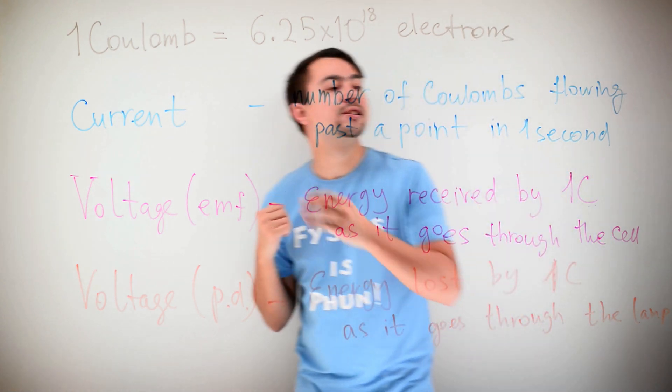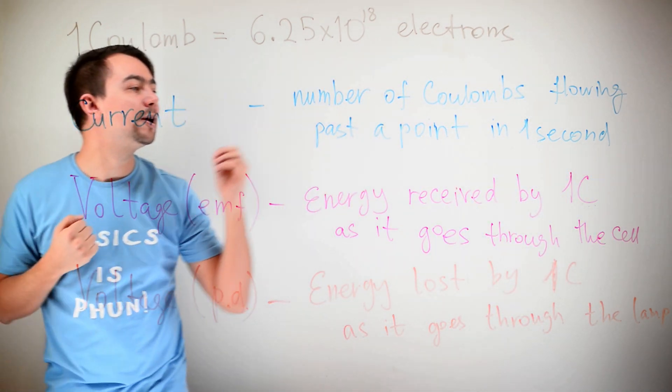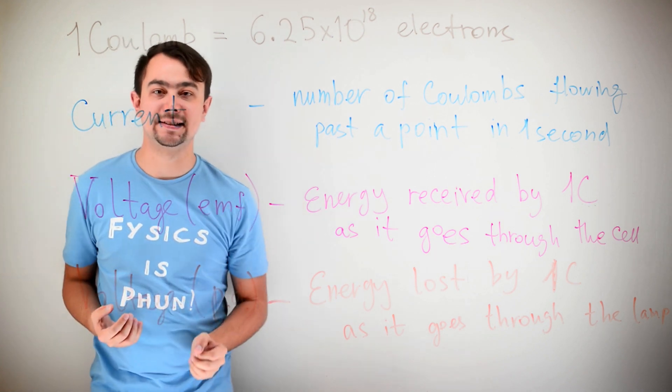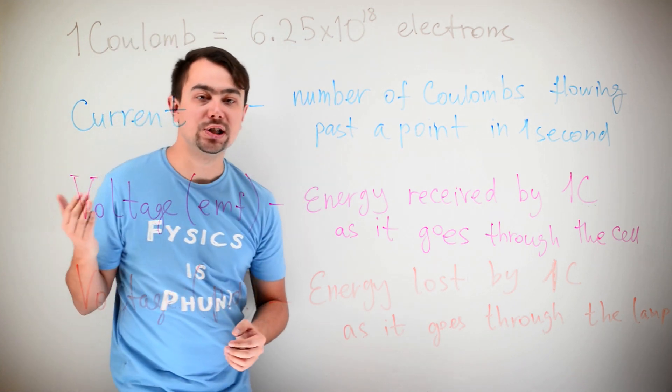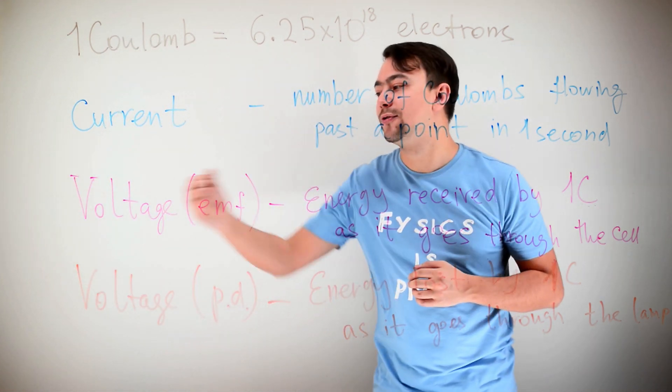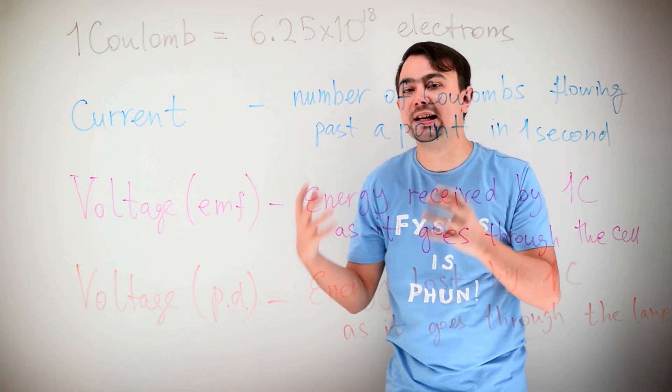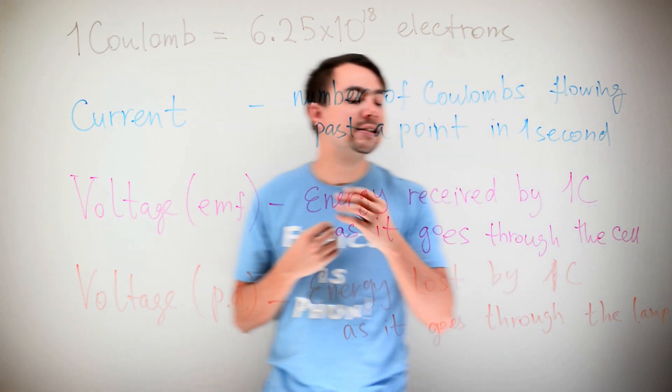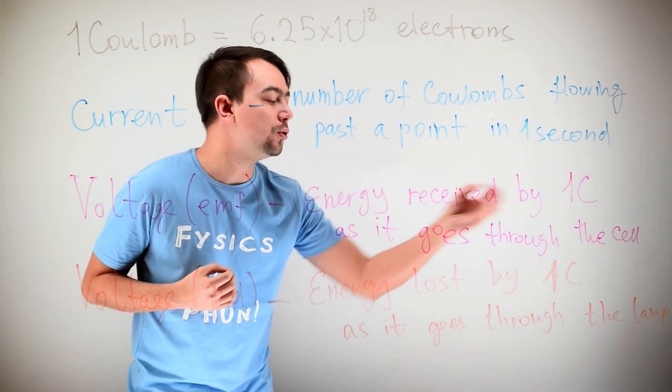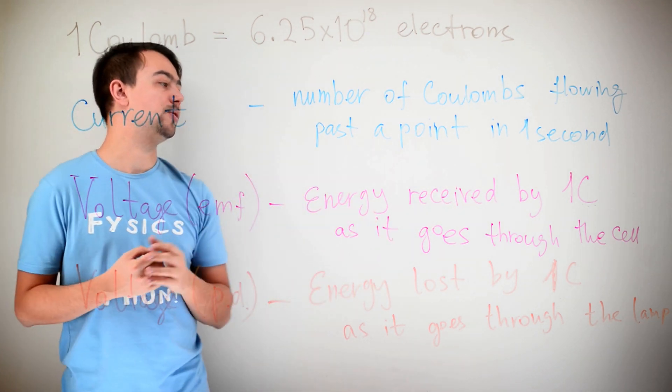The current. Current is the number of Coulombs flowing past a point in one second. Voltage. We have two types of voltage. Voltage EMF. It's called electromotive force. It's the energy received by one Coulomb of charge as it goes through the cell.